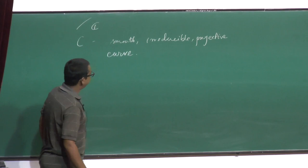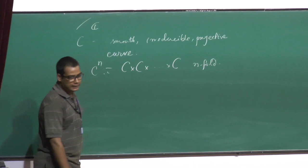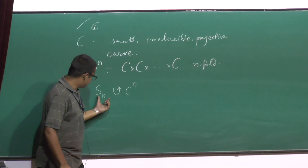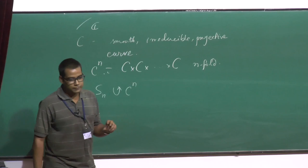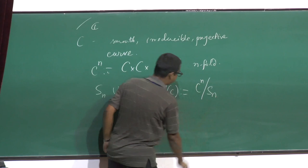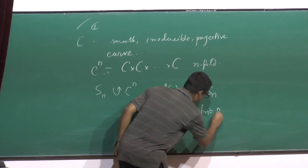Take C^N, the N-fold Cartesian product. On this C^N, the symmetric group S_N of N elements acts by permuting any N ordered pairs of C. Take the quotient C^N mod S_N. This is called the N-th symmetric power of C.